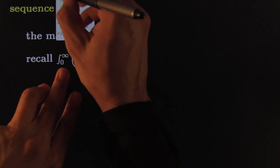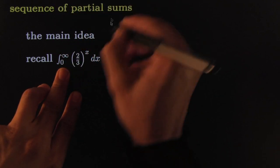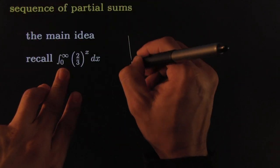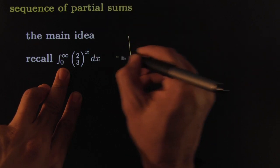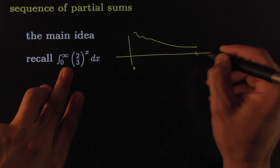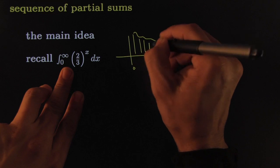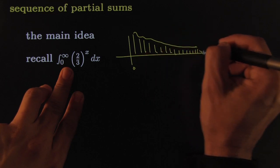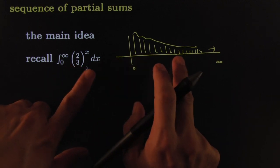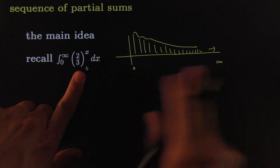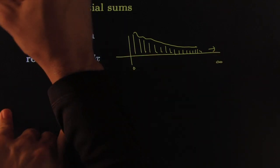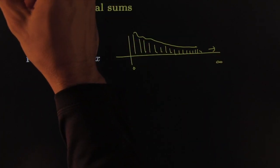Often they look like this — here's a picture: you've got some function that tapers down, and you're going from zero all the way to infinity, trying to find a numerical representation for that entire area. The trouble is that going to infinity seems to be too big a feat.